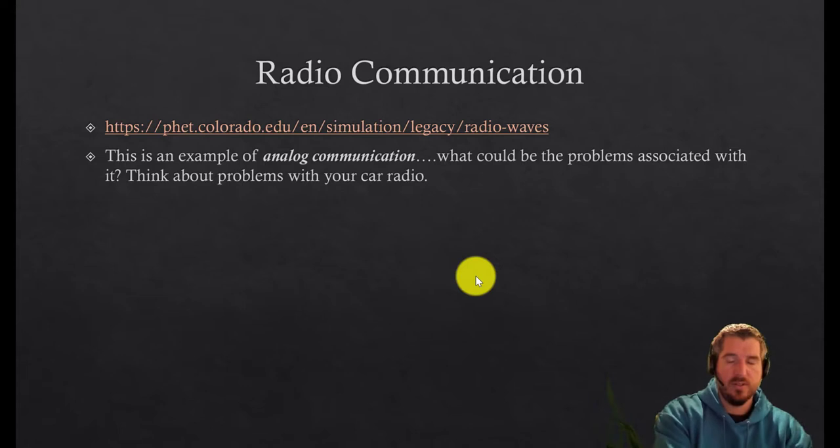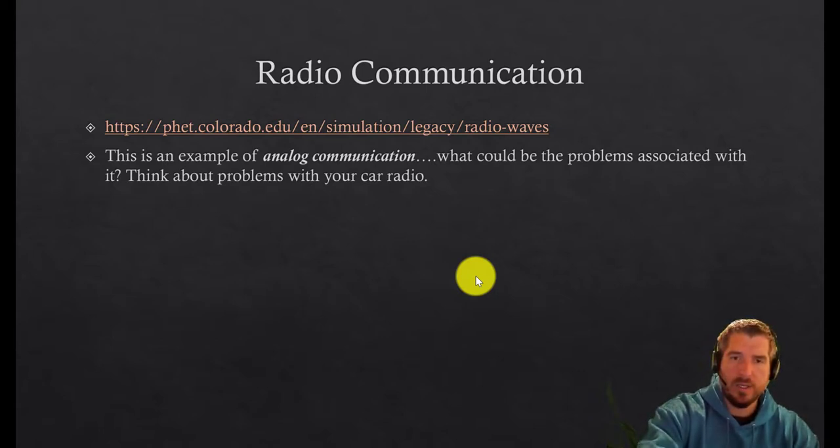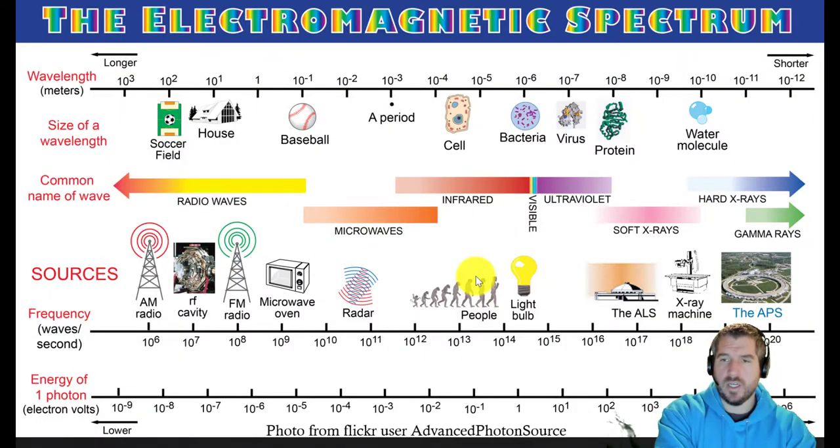The big problem is it's very susceptible to noise. So analog communication is very susceptible to noise because if you get a little mountain in the way or that wave reflects off something, you've probably done this in the radio, especially on long car trips when you're getting far away from the radio station it starts to get fuzzy or cuts in and out. And that's sort of the problem with analog communication.